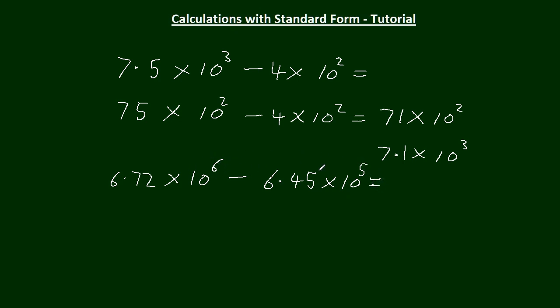With this one, we've got 10 to the 6 there and 10 to the 5 there. I think we'll make this one 10 to the 5. So because we're taking 1 off of here, we're going to increase this by 10. 67.2 times 10 to the 5, minus 6.45, minus 7 and 21 past.